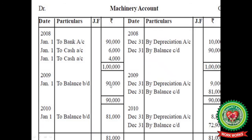This balance is carried forward to the next year. Again, depreciation is charged: 90,000 into 10% comes out Rs 9,000. From 90,000 we deduct 9,000 and the balance is Rs 81,000. This 81,000 is carried to the next year and depreciation is charged again: 81,000 into 10% comes out Rs 8,100. After three consecutive years charging depreciation at 10% according to the written down value method, the balance comes out to be Rs 72,900.